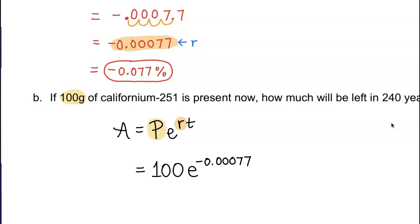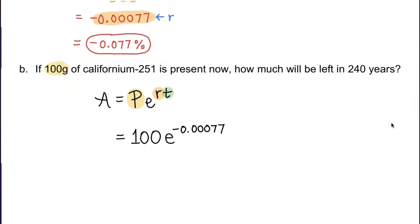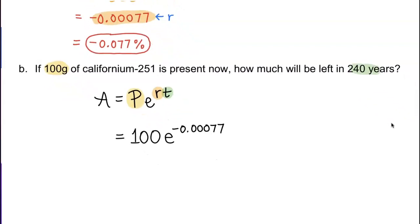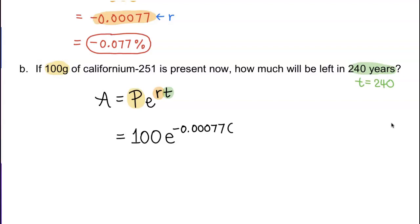The last part that I need is this T. T stands for time. How many years did they say? They said 240 years. So for T, you will plug in 240. I'll multiply that decay rate by 240. That's the setup.